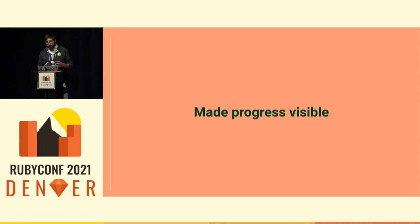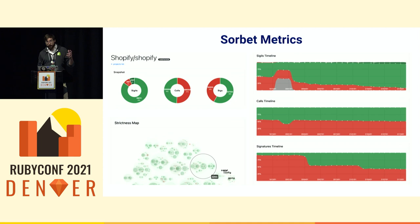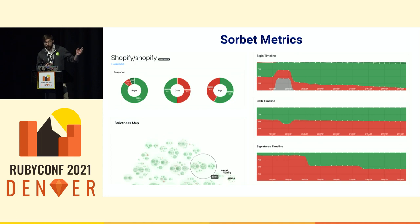Thanks to all those tools — especially Sorbet Metrics and Spoom — we wanted to make the progress visible both for our team and for the teams using Sorbet. Using Sorbet Metrics, and this report is generated by Spoom itself, we can have a dashboard where we see how many files are still at typed false (shown in red), or at typed true (in green), or higher strictness (darker greens). We can see the progression in the code base over time. For example, in our monolith right now we have only about 8% of files still at typed false — meaning something like 39,000 files are at typed true, which is very encouraging.